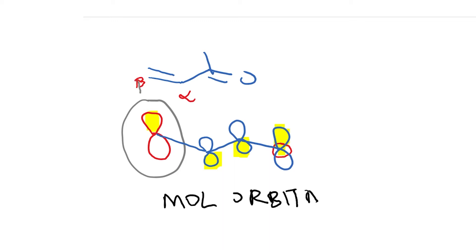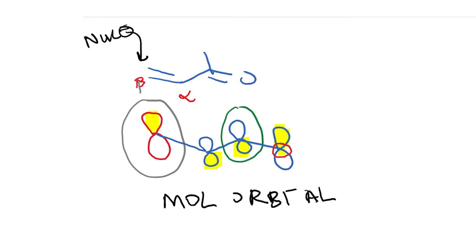We realize from the molecular orbital picture that the beta carbon has the largest lobe, and therefore it is quite natural that we expect the nucleophile to attack at this site. But we must also recognize that the carbonyl carbon is also a site of attack, and the nucleophile can attack there as well, giving you the 1,2 product.